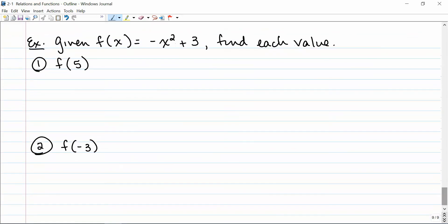So let's do a couple examples. So if we're given f of x equals negative x squared plus 3, we need to find each value. So in order to find f of 5, I'm going to plug in 5 for x. So negative 5 squared plus 3. What I really need to do first is square the 5 and then multiply it by negative 1. So 5 squared is 25 times negative 1 is negative 25 plus 3 gives me a negative 22. So in other words, when x is 5, f of x is negative 22.